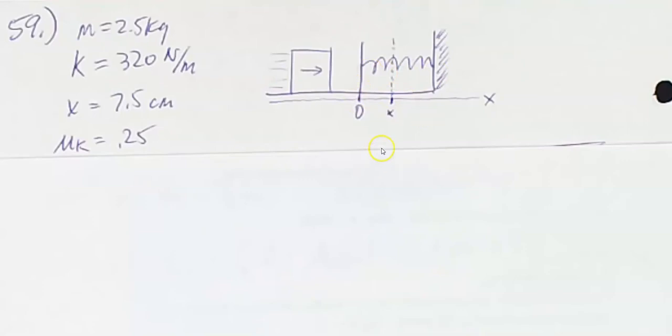I've made a little diagram here. I've labeled the seven and a half centimeter point where it stops as x. The block is coming in with some unknown velocity. Here's what is given.